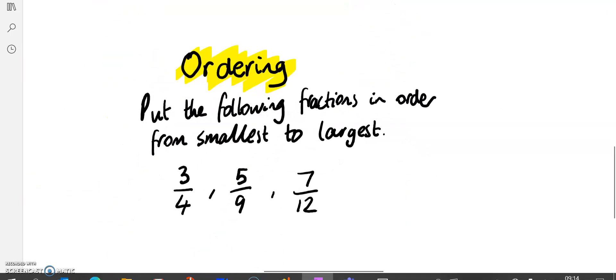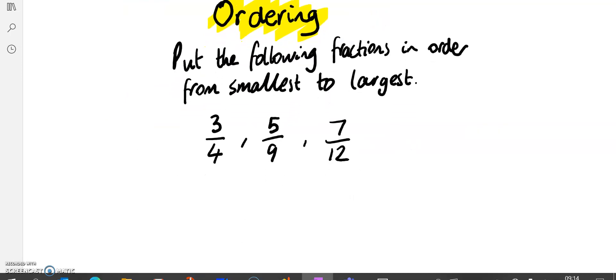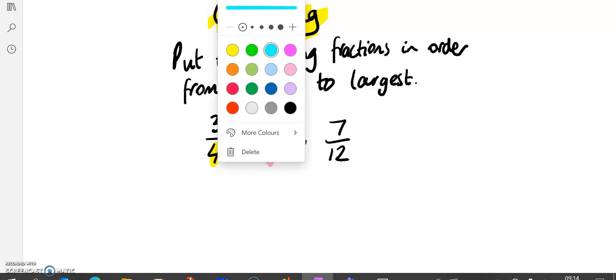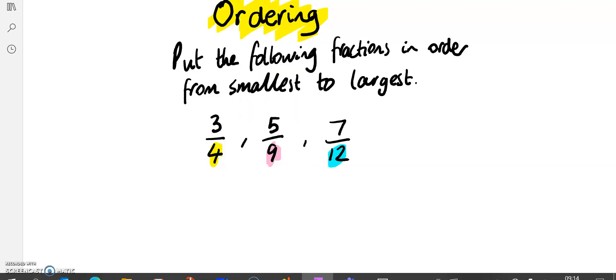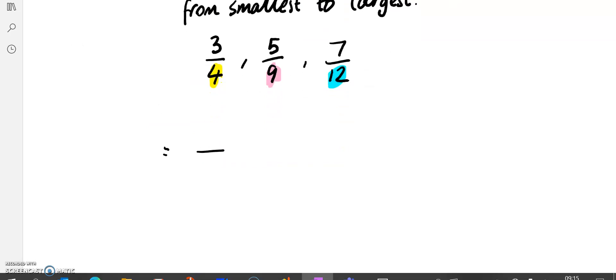We then looked at ordering fractions, putting fractions in order from smallest to largest. It's really difficult to order fractions that have different names. Do you notice that these are quarters, these are 9ths, and these are 12ths. That's the names of them. Quarters, 9ths, 12ths. So it's hard to identify which of these is closest to the quarter, to the 9th, or to the 12th. So it's more helpful if we can get them all to have the same name. So we're going to have a look at these highlighted numbers here. So the 4, the 9, the 12.